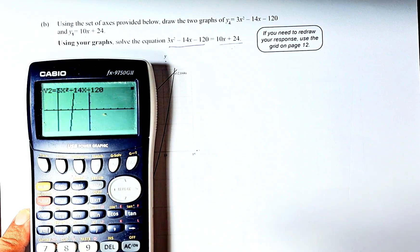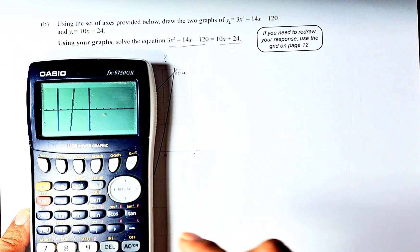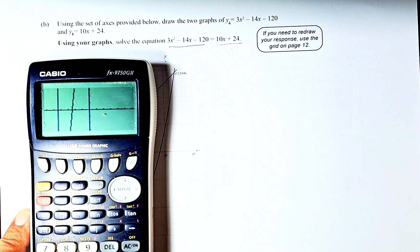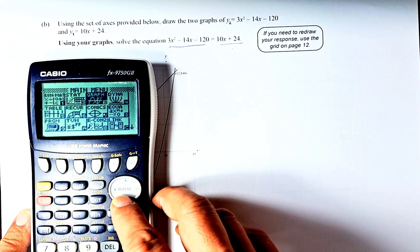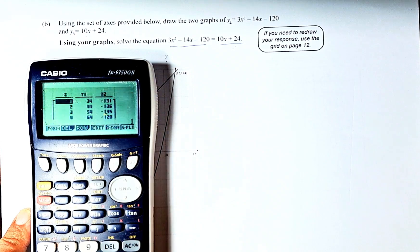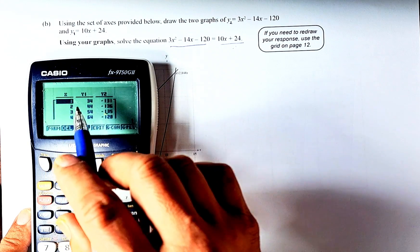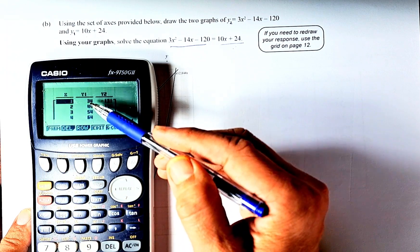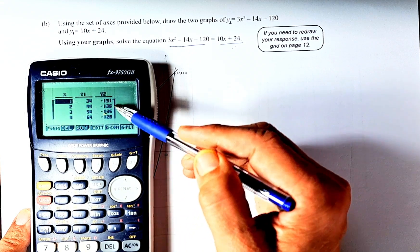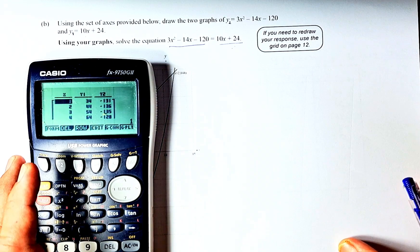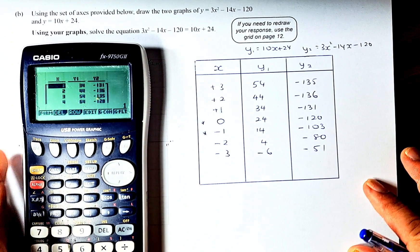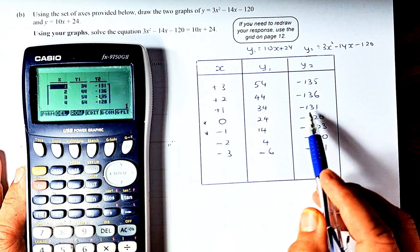Rather than viewing the graph directly, go to menu and select table. Press the table button to generate a table of values. I've reproduced the table here. When x = 1, y₁ = 34 and y₂ = -131. When x = 2, the following values are shown. We'll use these values to plot the graph.